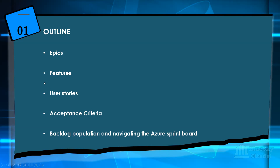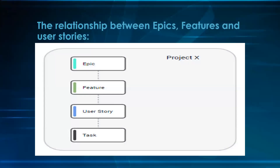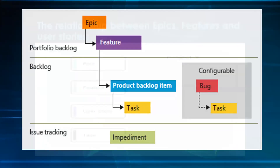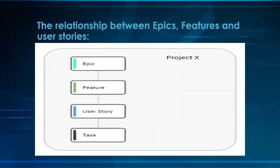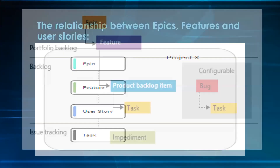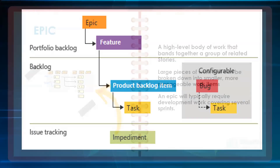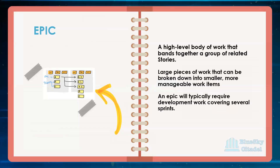So in terms of an outline, we're going to be looking at epics, features, user stories, acceptance criteria, and then we'll end by populating the backlog. I'll show you how to navigate the Azure Springboard. Let's get started. Starting with epics — you must have heard mention of epics, features, and user stories. I'm going to be discussing the relationship between the three.